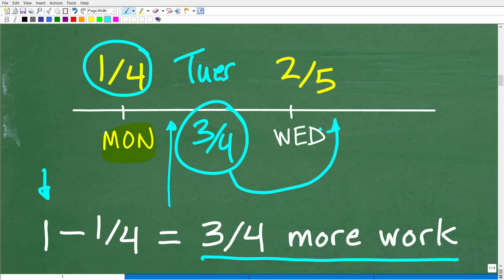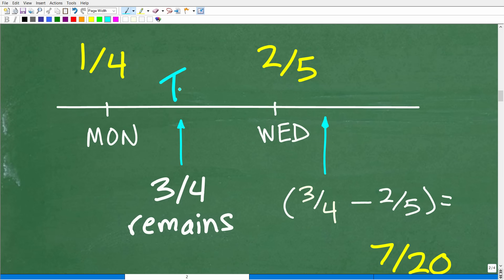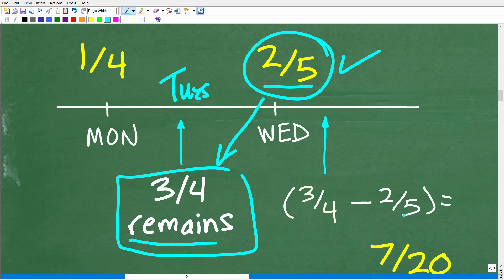Well, then on Wednesday, you did more work. So what do we need to do here to figure out how much remains? Well, what we need to do is subtract some fractions. All right, so on Tuesday, again, so here's Tuesday, we have three fourths remaining, okay? But on Wednesday, we decided we wanted to do a little bit more work, and we did two fifths more. So how much remains? Well, it's a pretty straightforward problem. It's going to be three fourths minus two fifths, okay? We're going to take away this amount for how much remains right here. Okay, we did more work. This is how much remains. So three fourths minus two fifths is basically how we get to the solution.